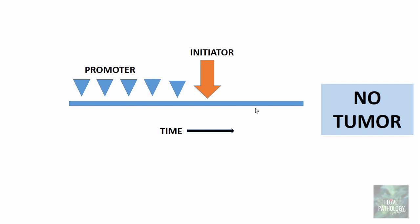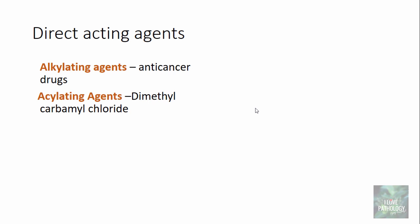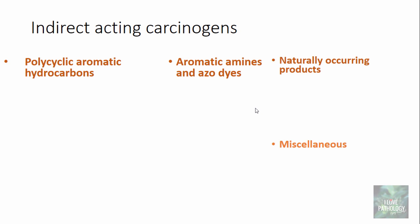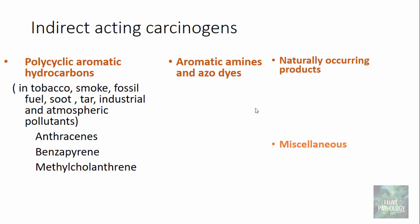Chemical carcinogens can be direct acting or indirect acting agents. Directly acting agents include alkylating agents like anti-cancer drugs and acylating agents like dimethyl carbamyl chloride, implicated in leukemias and lymphomas. Indirect acting carcinogens need metabolic activation and include polycyclic aromatic hydrocarbons — found in tobacco, smoke, fossil fuel, soot, tar, and industrial pollutants — such as anthracenes, benzopyrene, and methylcholanthrene.